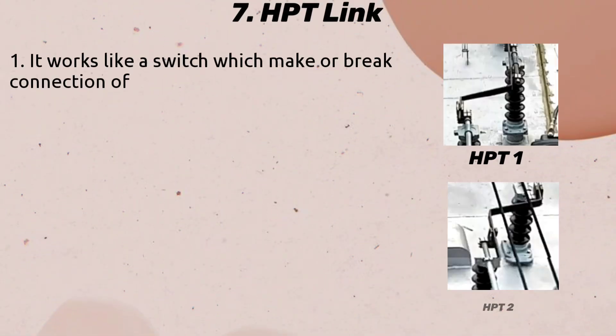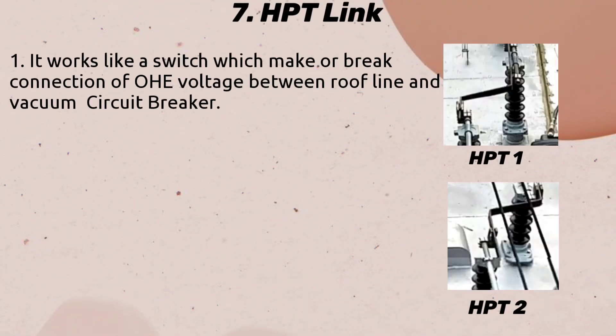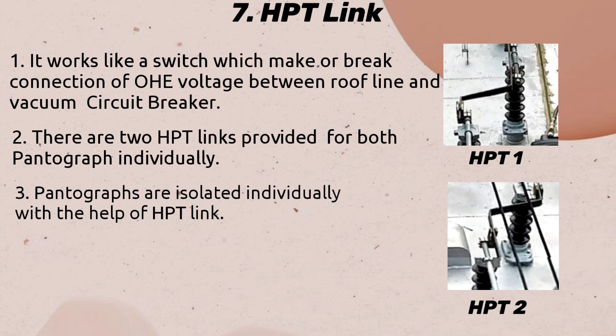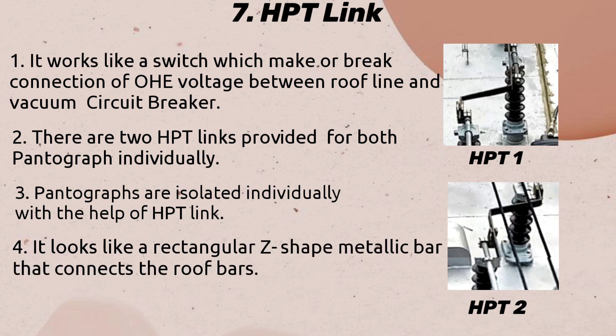HPT Link: It works like a switch which makes or breaks the connection of OHE voltage between the roof line and the vacuum circuit breaker. There are two HPT links provided for both pantographs individually. Pantographs are isolated individually with the help of the HPT link. It looks like a rectangular Z-shaped metallic bar that connects the roof bars.